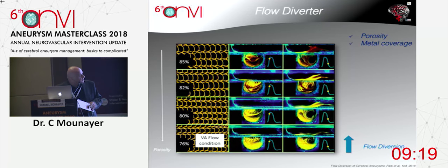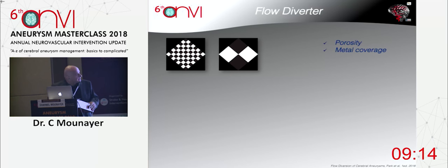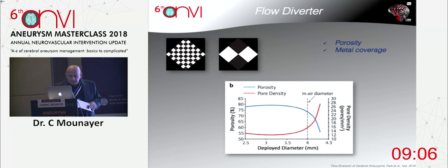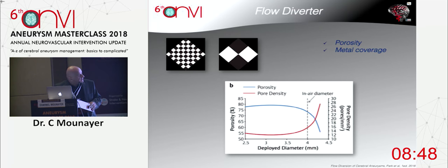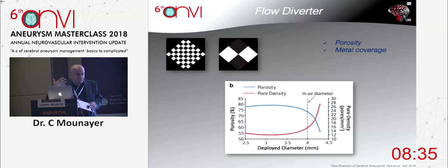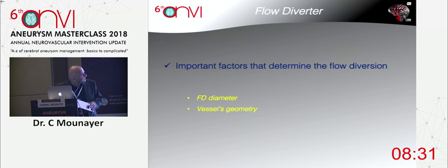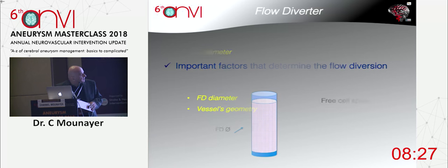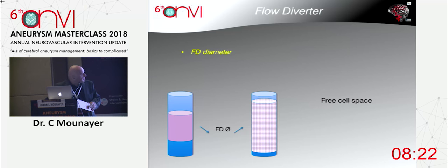What's really very important is to increase the metal coverage and lower the porosity over the neck of the aneurysm. The size of the stent is very important to achieve flow diversion. By undersizing this stent you can increase the metal coverage over the neck — and this coverage is not linear, it's exponential. We are playing around a one-millimeter difference in diameter. When we say oversizing, we are oversizing by one millimeter in diameter of the stent.